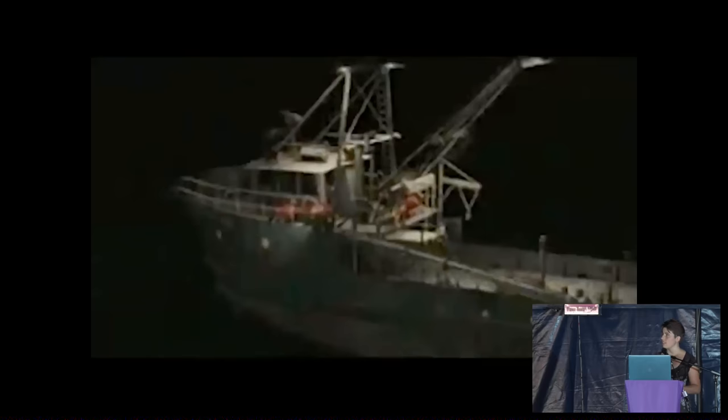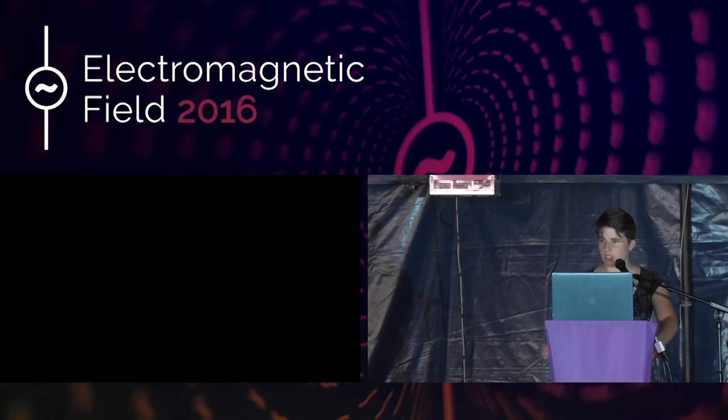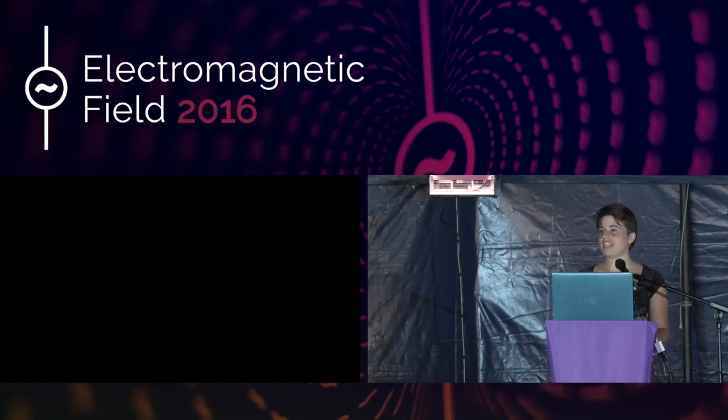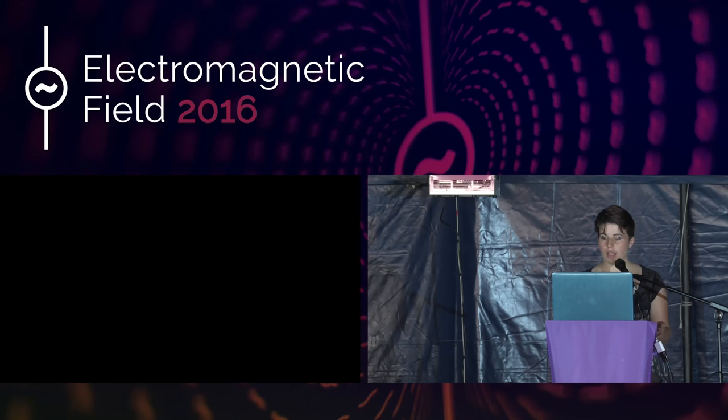Another big thing you'll notice in films after the 2000s is good oceans. This is The Perfect Storm — and this was a technology invented by ILM called Flip. It involves a really complicated system of volumes and particles all interacting and sharing attributes. It's very very complicated, I use it all the time and I hate it — but it produces beautiful water, and before that you couldn't really do it.